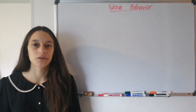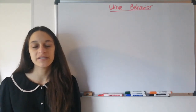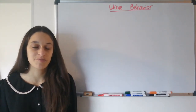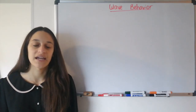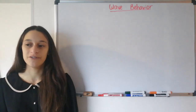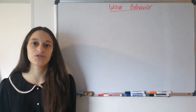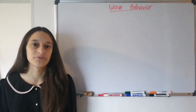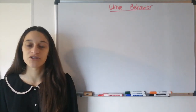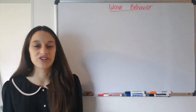Last class we learned about the different characteristics that a wave can have — frequency, wavelength, amplitude, period, and wave speed. But today we're going to look at the things that waves can do: how they behave differently from particles when they interact with other waves or with different obstacles or media. There are four different wave behaviors we're going to look at today: reflection, refraction, diffraction, and interference.